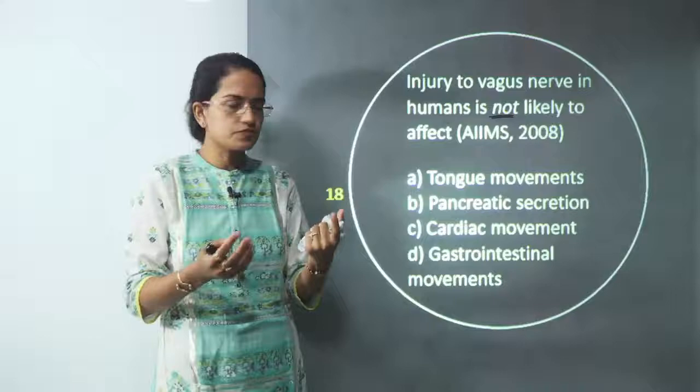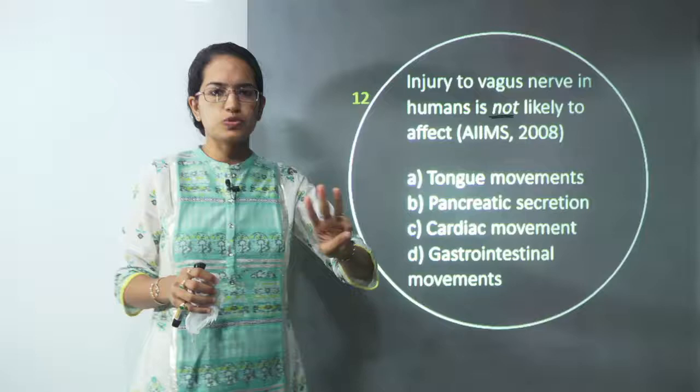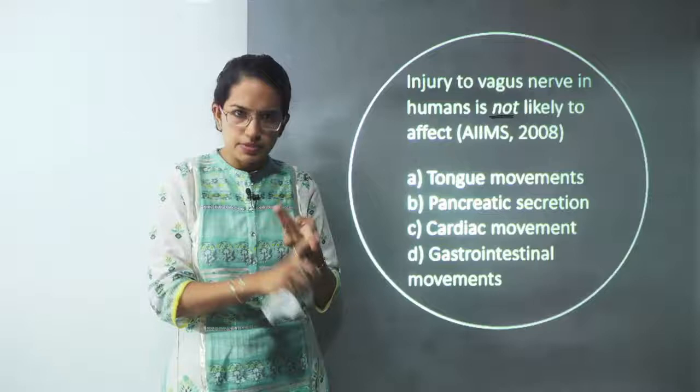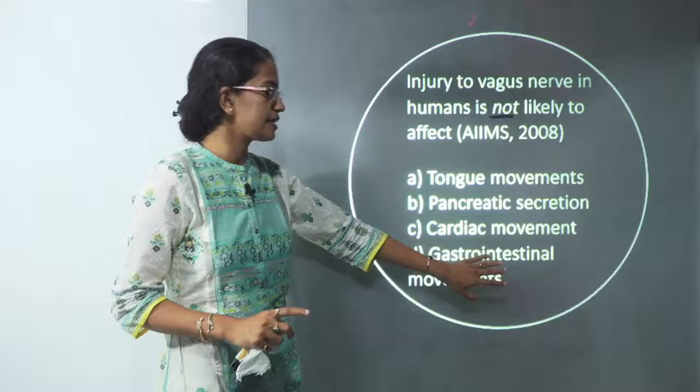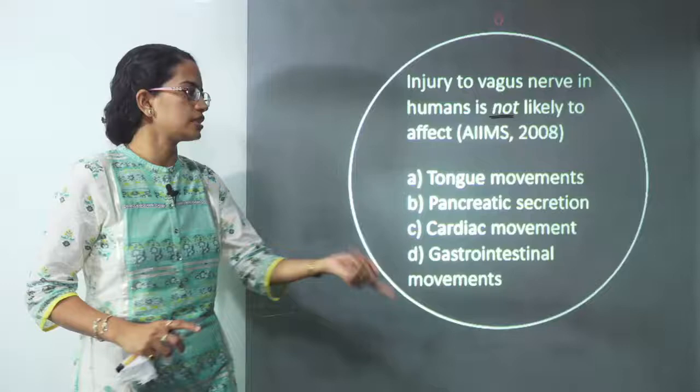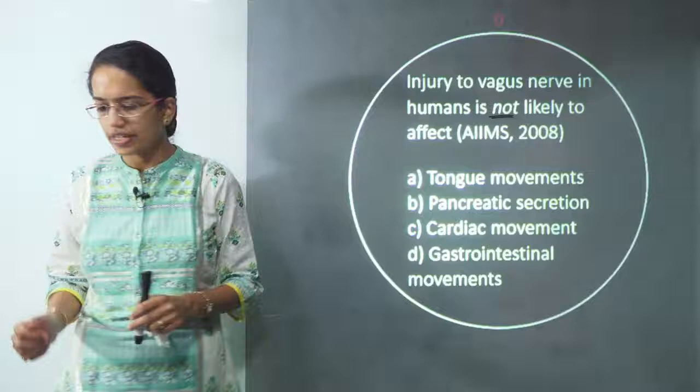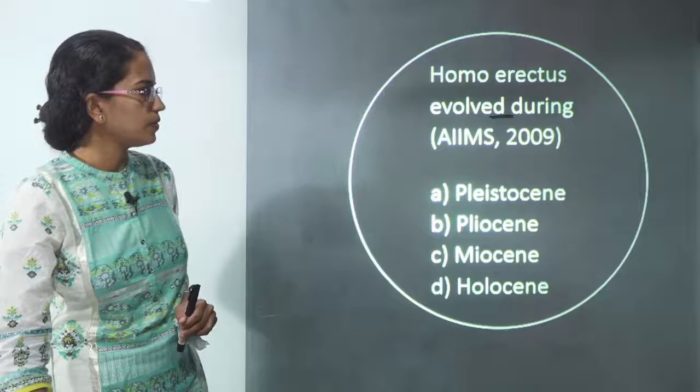The vagus nerve supplies to the lungs, heart, and digestive system — three things to remember. So pancreatic, cardiac, and gastrointestinal functions are affected by vagus nerve injury. The only choice NOT affected would be tongue movement. So A is the correct answer. Let's move on to the next question.